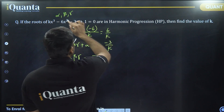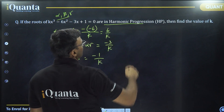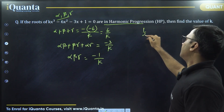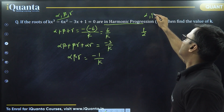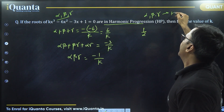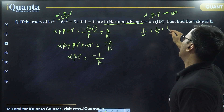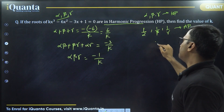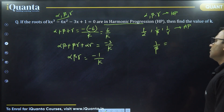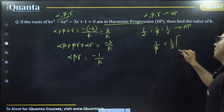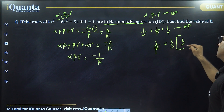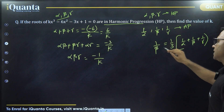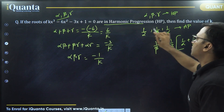Now the question says that alpha, beta, gamma are in harmonic progression. If they are in HP, that means 1 by alpha, 1 by beta, and 1 by gamma should be in AP. If they are in AP, then 1 by beta should be equal to the simple average of all three numbers — that is 1 by alpha plus 1 by beta plus 1 by gamma divided by 3.